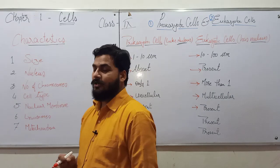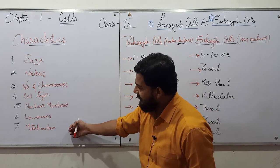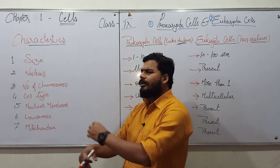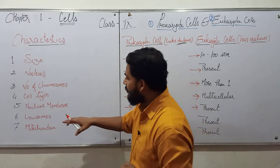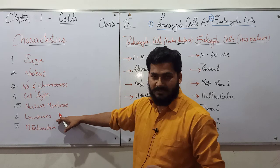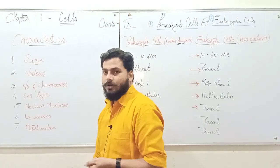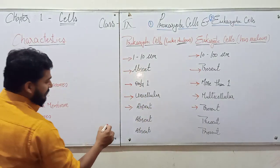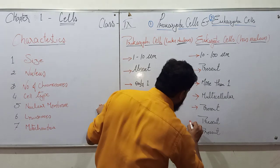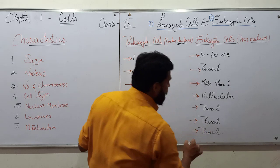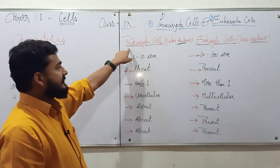Finally we talk about two cell organelles: lysosomes and mitochondria. Lysosomes are the protective units of the cell, and mitochondria are the powerhouse of the cell. In the case of prokaryotic cells, both are absent, while in the case of eukaryotic cells, which are better developed, both are present.